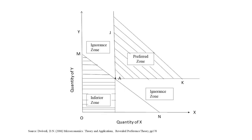Let us learn this using a graph. Along the x-axis and y-axis, we represent goods X and goods Y respectively. The initial budget line for the consumer is MN, representing various combinations of goods X and Y that the consumer can purchase with a given income and prices, and basket A is preferred by the consumer. Any point on the budget line is therefore revealed inferior to basket A. All the bundles lying below the budget line are inferior and therefore not preferred, as they are all cheaper than basket A. This is represented as the triangle MON in the graph, marked as the inferior zone containing cheaper combinations.